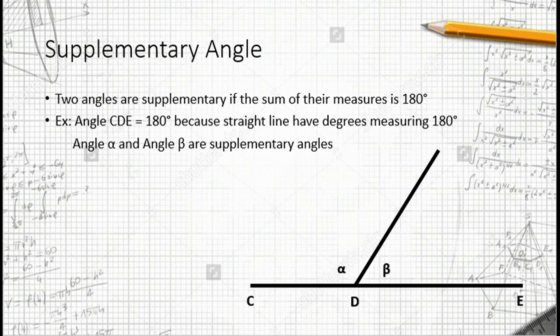The second vocab we are going to learn is supplementary angle. It is very similar to complementary angle. Basically, two angles are supplementary if the sum of their measures is 180 degrees. Simple, right?